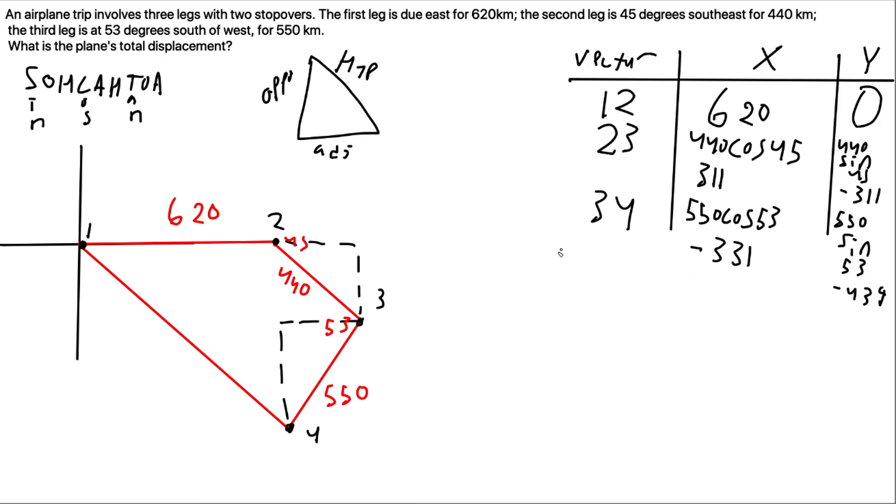Now that we've calculated all these points, point 1 to 4 is the total, that's final position and starting position, so we're going to have to add all these up. So 620 plus 311 minus 331 is exactly 600. For the y, 0 minus 311 minus 439, that comes out to negative 750.